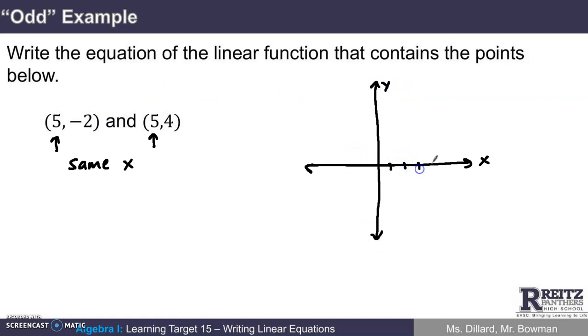Don't worry about making an accurate graph. I need 5 negative 2, which should be right there. 5 is x, negative 2 is y. The other point I need is 5, 4. It would have the same x but a y up here. What kind of line is going to go through that set of points? It's a vertical line.